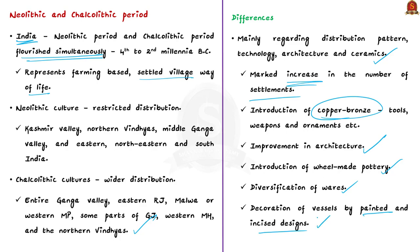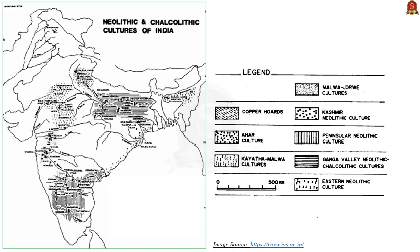A map shows that a number of Chalcolithic cultures have been discovered in northern, central, and western India, including the Ahar culture, Kayatha, and Malwa cultures. These are among the important Chalcolithic cultures of India. Let us see them one by one.